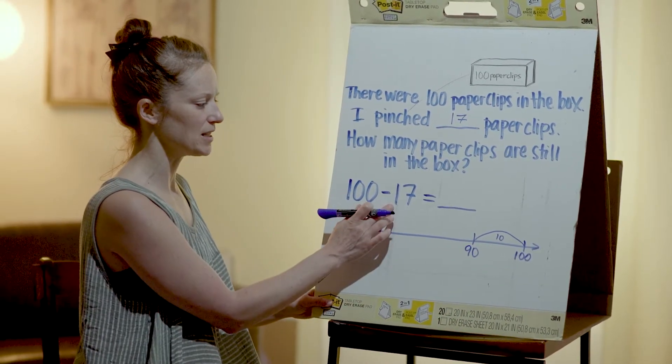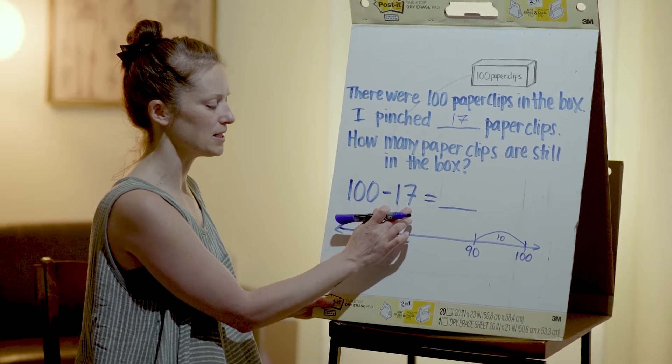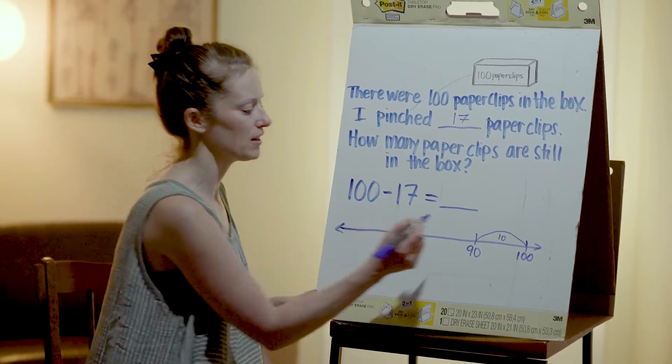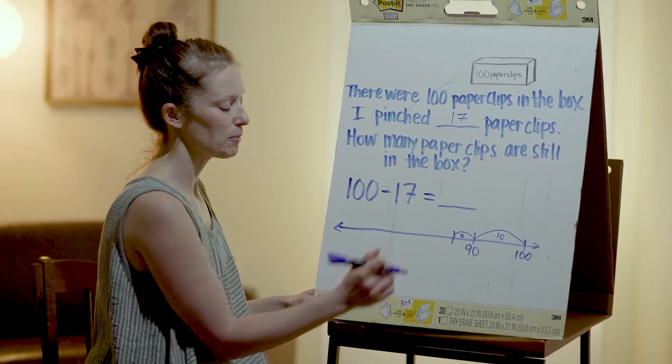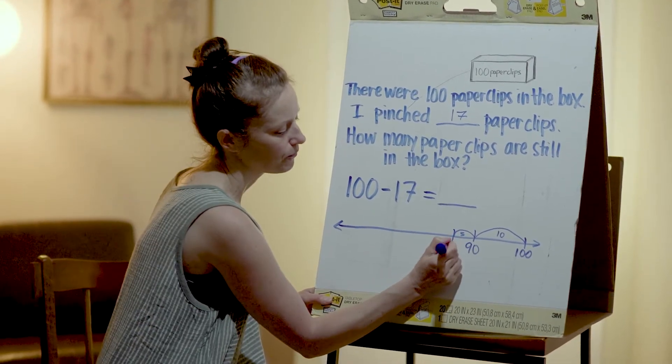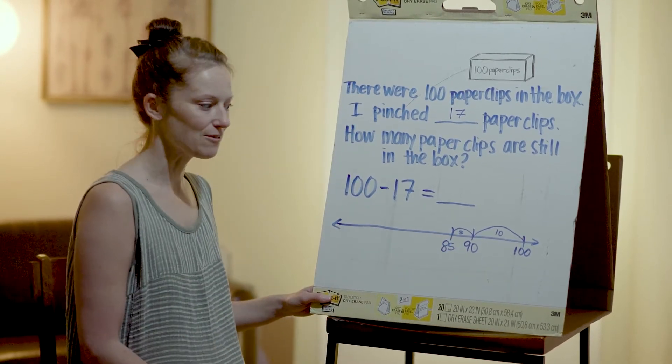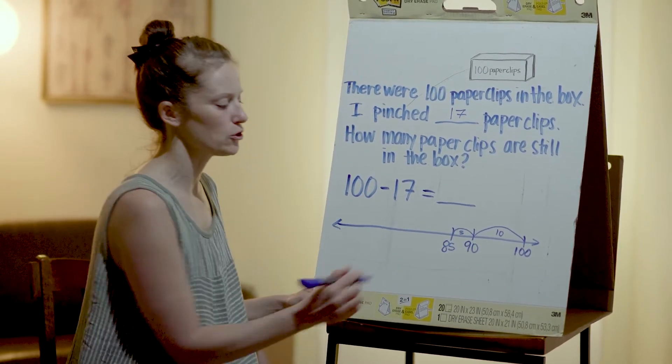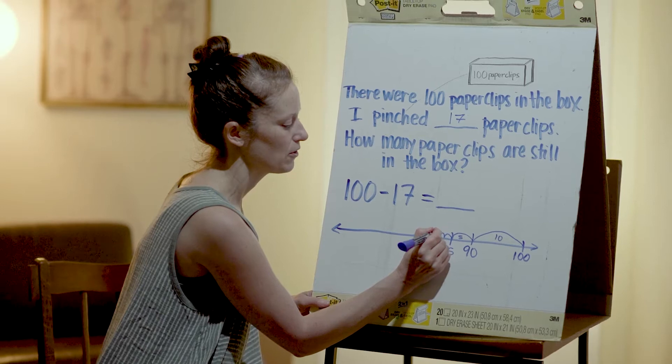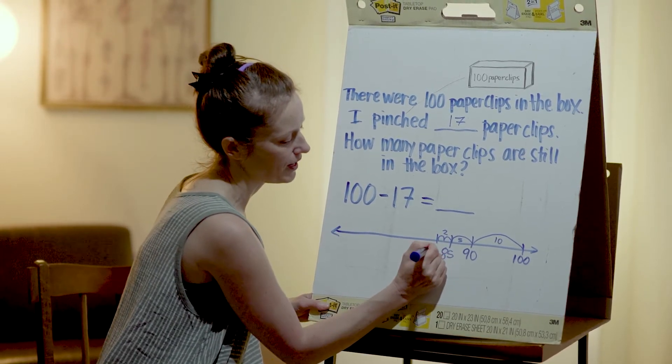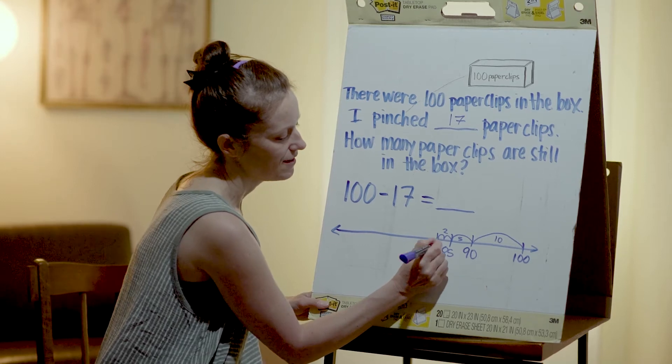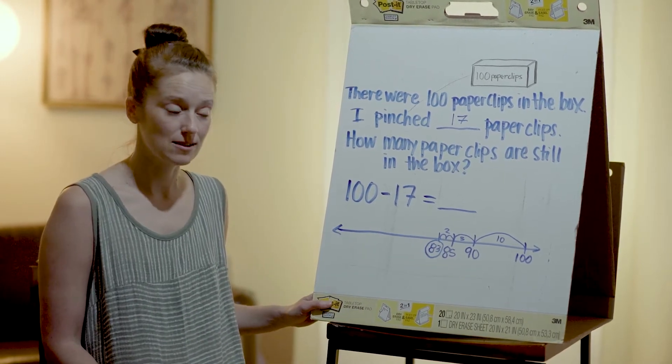All right, so I've jumped back my 10. Now I need to jump back my 7. I want to stick to my friendly numbers. So I'm going to jump back 5 to start. So 90, jumping back 5, and I get to 85. Yes, but I still need to jump back 2 more in order to jump my full 7. So I'm going to jump 2 here. 85, jumping back 2, and I get to 83. So there are 83 paperclips left in the box.